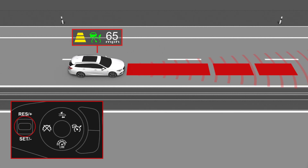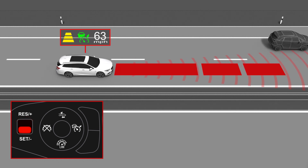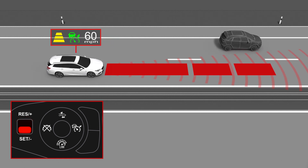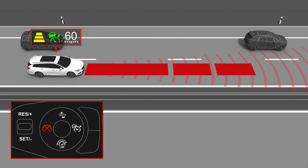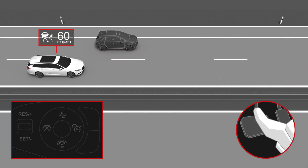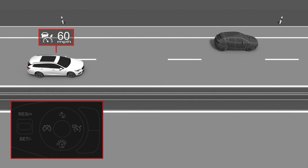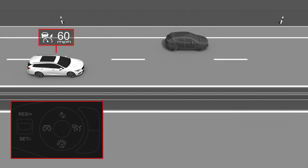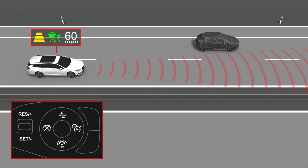Decrease the set cruising speed by moving the thumb wheel down. To deactivate ACC, press the cancel button on the steering wheel. Pressing the brake pedal also deactivates the system. To easily reactivate adaptive cruise control and resume the previously set cruising speed, simply move the thumb wheel to resume.